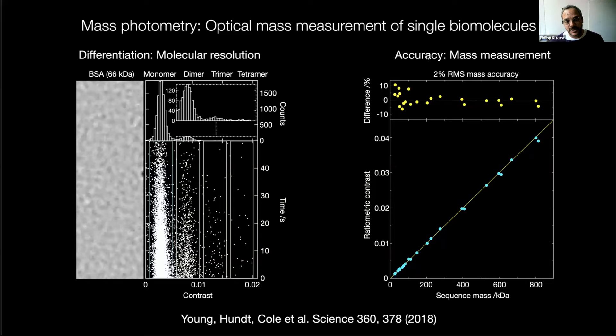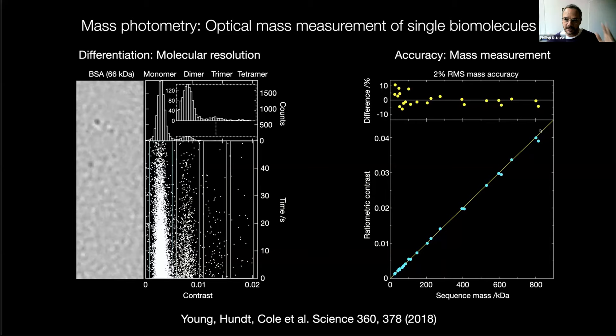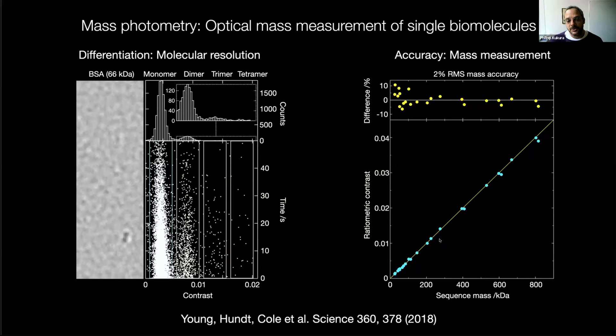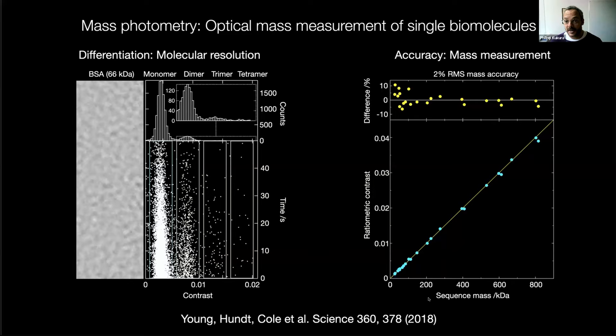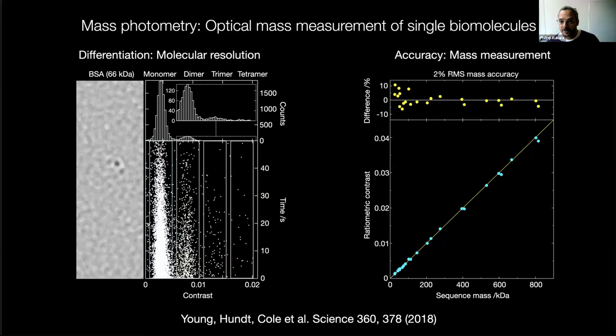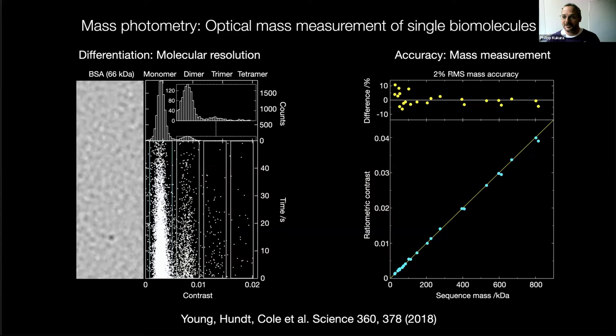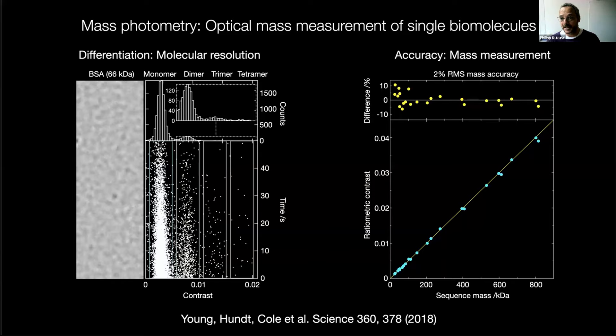We can now tell the difference between one and two and three and four proteins, or tell the difference between two proteins being apart and two being together. For accuracy, if we take a whole bunch of proteins and evaluate the relationship between contrast and sequence mass, the accuracy is on the order of about 2%. If you're doing mass spec you'll say that's terrible, but if I have a 100 kilodalton protein I'll measure between 98 and 102, giving confidence I'm looking at the right protein.